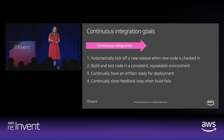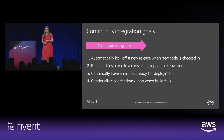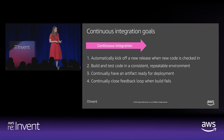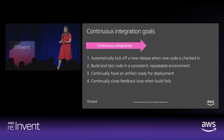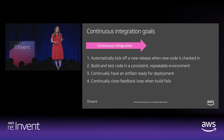Let's review the continuous integration goals. One: automatically kick off a new release when new code is checked in — done with CodePipeline. Two: build and test code in a consistent, repeatable environment — done in CodeBuild with a new Docker container every time. Three: continually have an artifact ready for deployment — in your CodeBuild build, you produce that Docker image, push it into ECR, or have a serverless application template ready to go. And finally: continually close the feedback loop when the build fails — which you can do in both CodeBuild and CodePipeline.